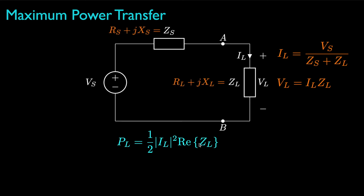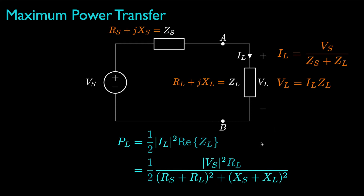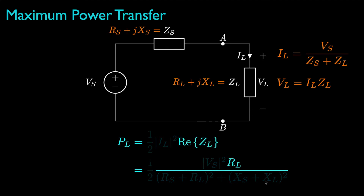If we think of the source and load impedances in terms of their resistances and reactances, we can expand the average power for the load in terms of those quantities. The magnitude squared for the load current is the squared magnitude of the source voltage divided by the squared magnitude of the sum of the source and load impedances, which is the sum of the square of the resistances plus the square of the reactances. And the real part of the load impedance is simply the load resistance.